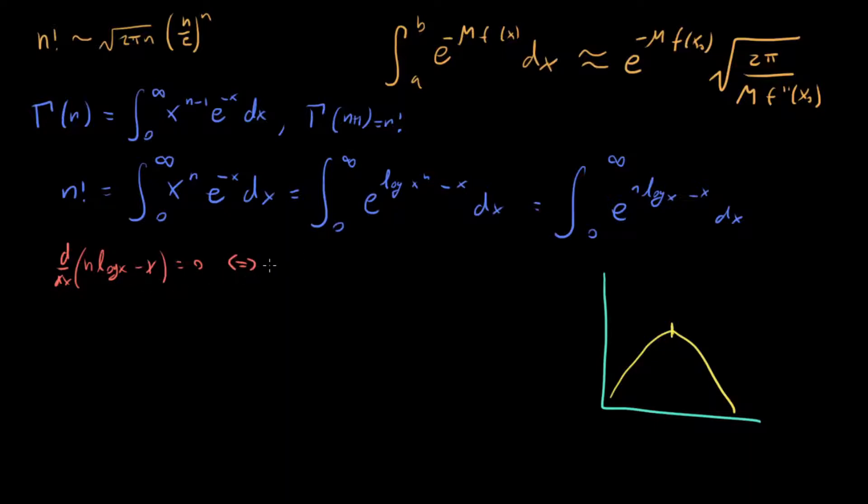Well, this is the same as n over x minus one equals zero. So we can see that x equals n corresponds to the global minimum. So we want to expand around n.